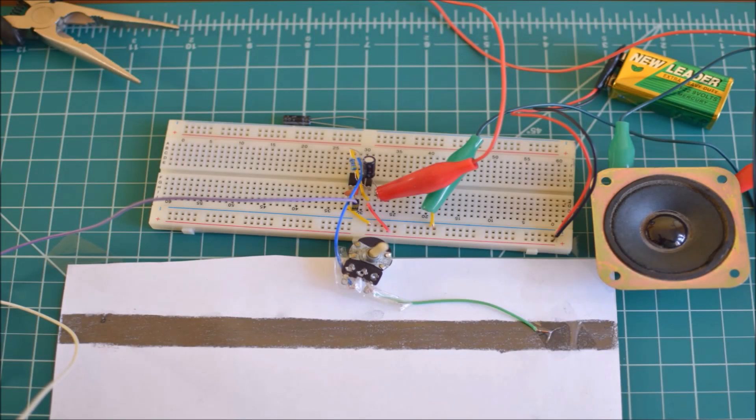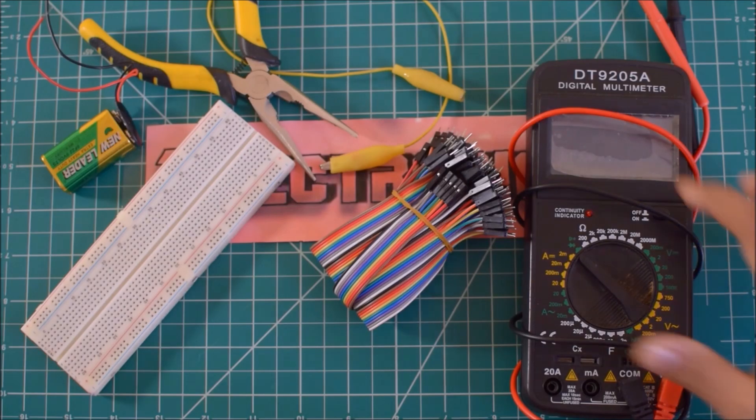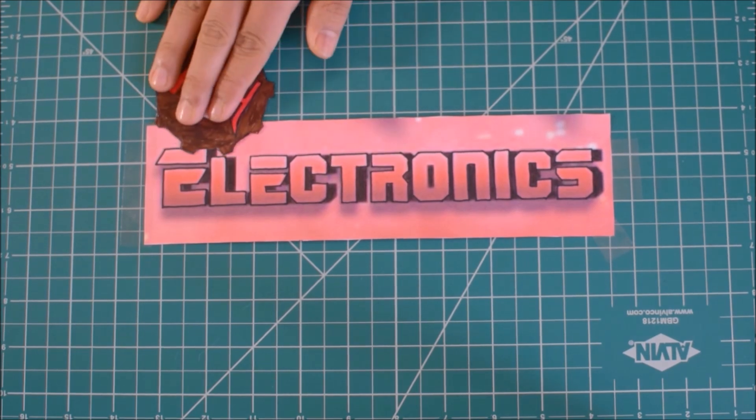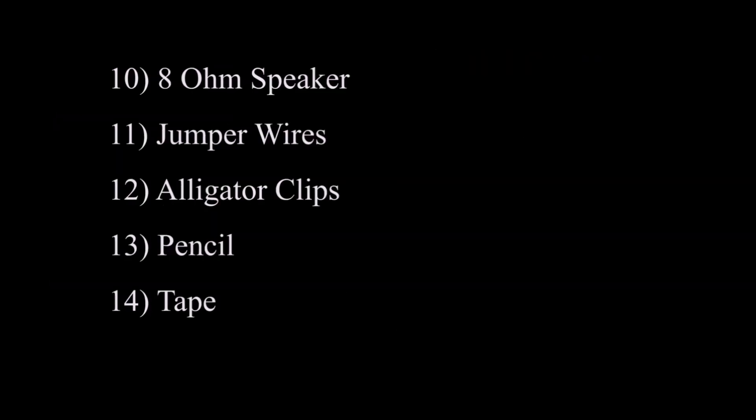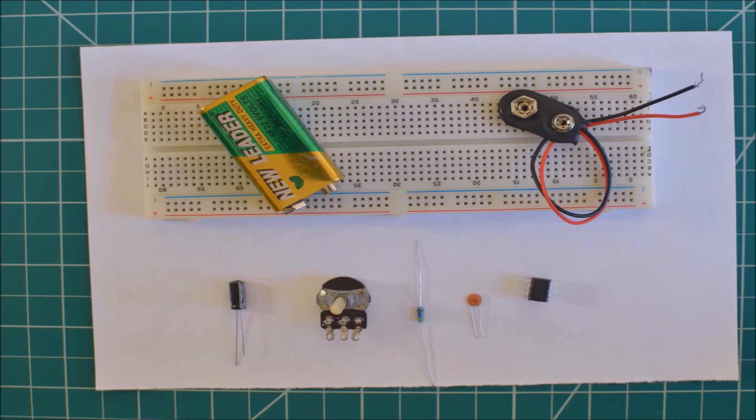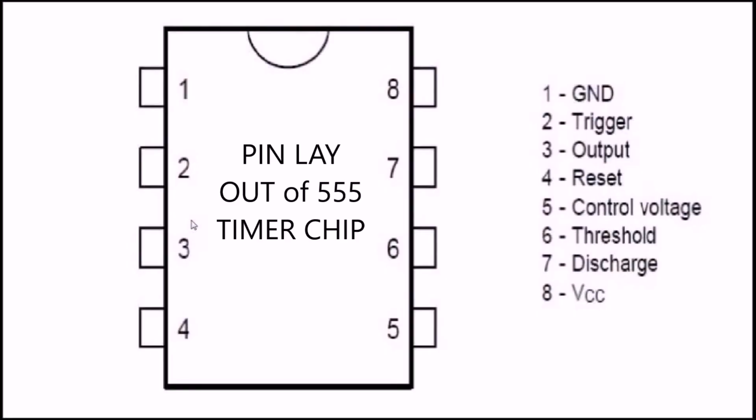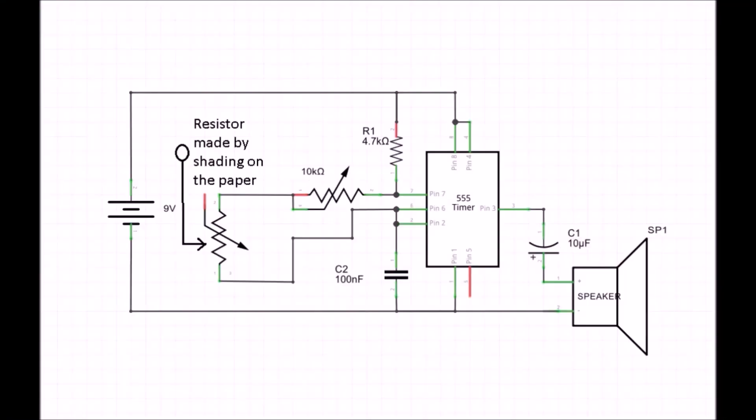Today I'm going to show you how to make an audio synthesizer using a 555 timer IC chip. Here's the schematic of the circuit that we're going to build. For this circuit we will make a variable resistor of our own by shading on a piece of paper.